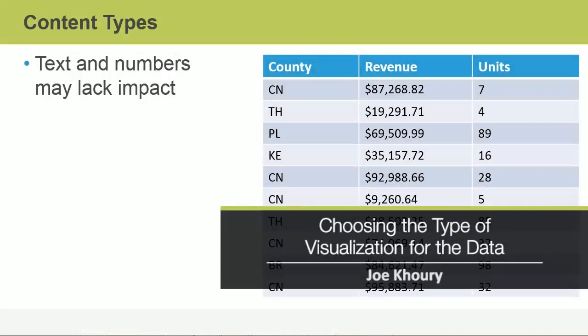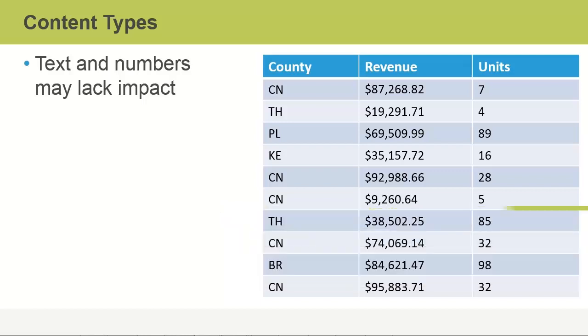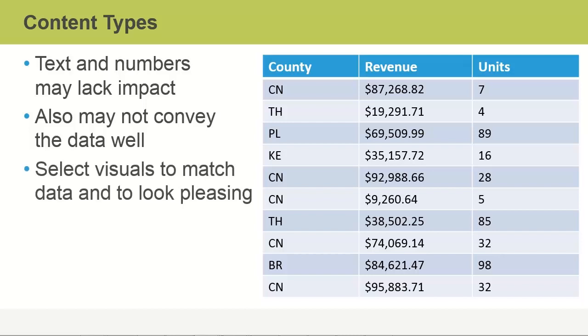Choosing the type of visualization for the data. Quite often text and numbers by themselves lack impact and do not express the story behind the data, or at least the story that you're trying to tell. They may also not convey the data well if there is a pattern or some other aspect of the data that you're trying to communicate. Numbers and text alone in this case just are not adequate. You need to choose graphics and visuals that match the data and look pleasing to the audience for maximum impact.